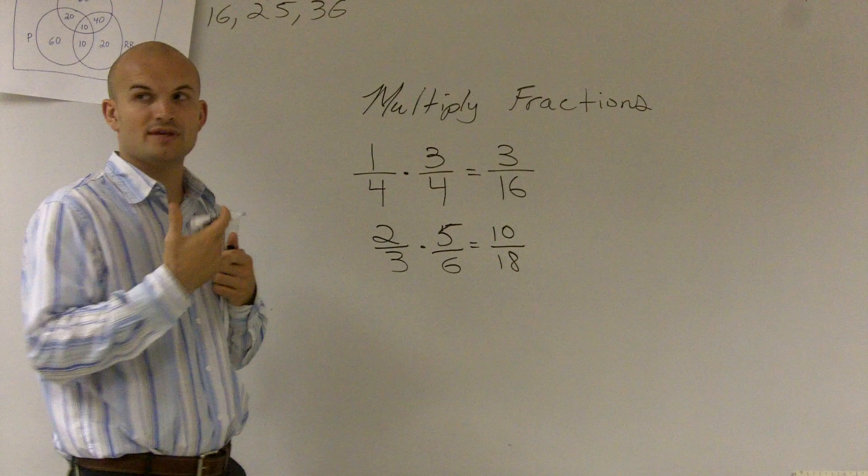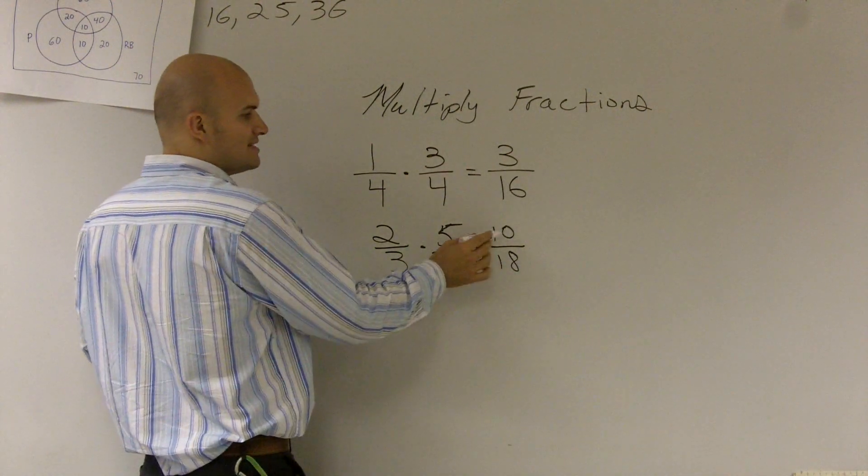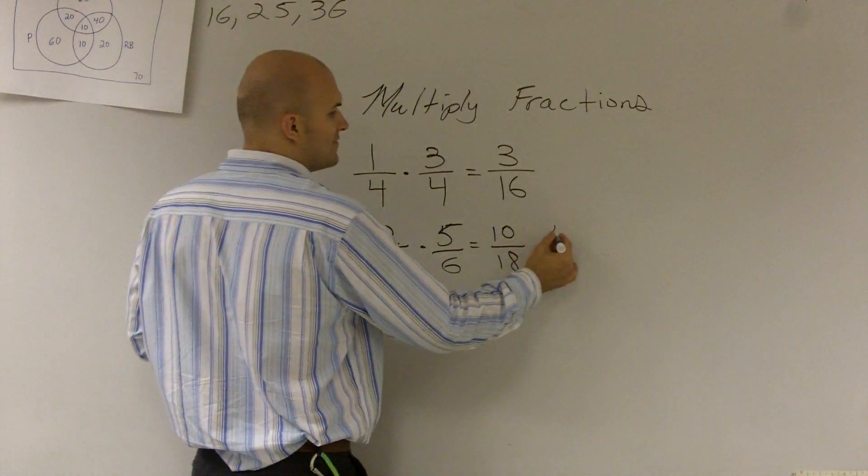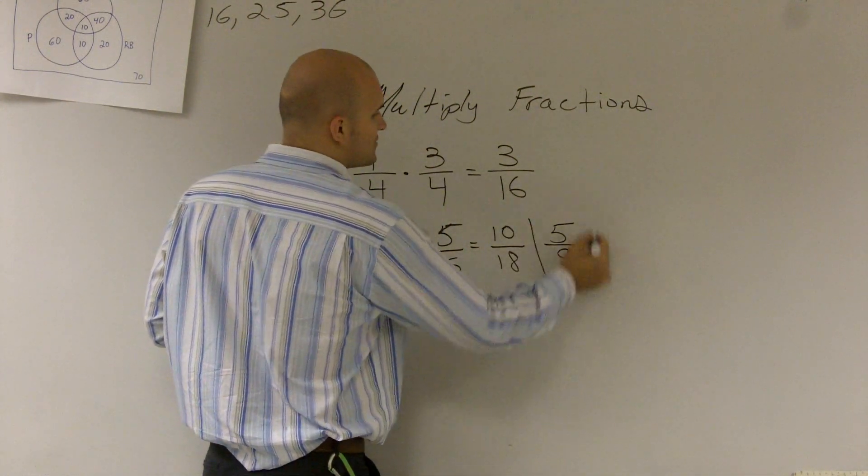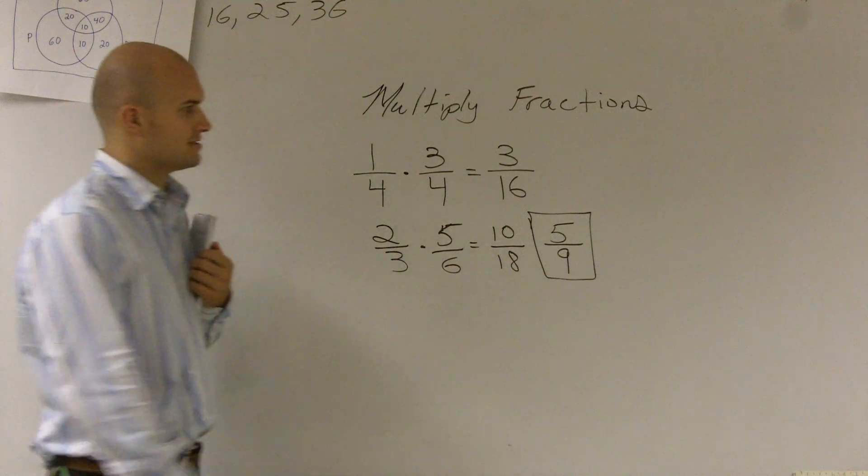If I take out a 2, if you think of dividing with taking out, if I take out a 2 out of 10, I'm left with 5. And taking 2 out of 18, I'm left with 9. So my final answer for this one would actually be 5/9.